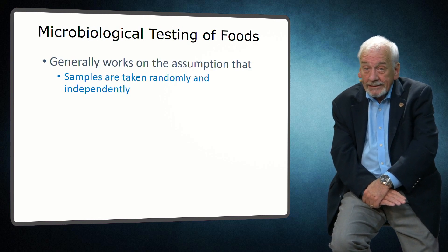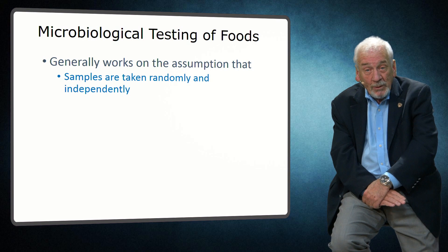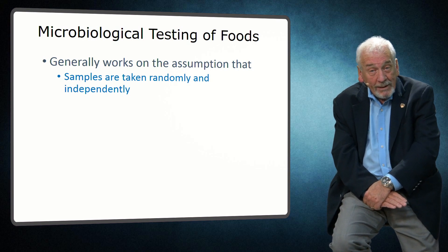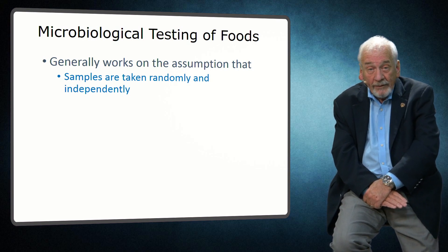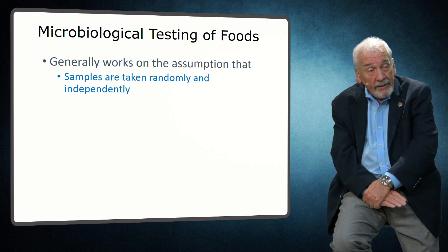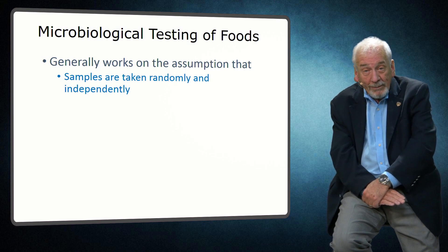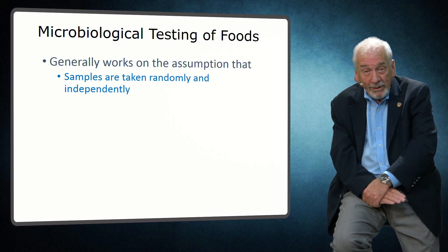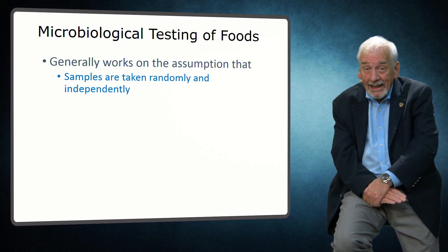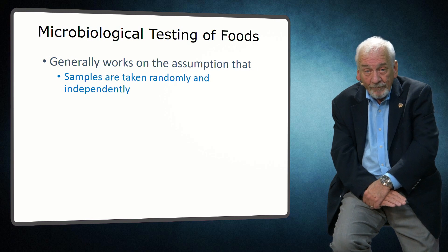For instance, the statistical basis for testing assumes that the samples are taken randomly and independently. If this assumption is not met, then an alternative statistical analysis or sampling schemes may be required. It's also worth noting that one of the challenges in sampling foods is actually taking a random sample.